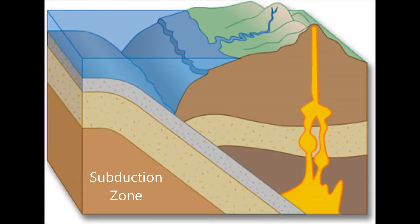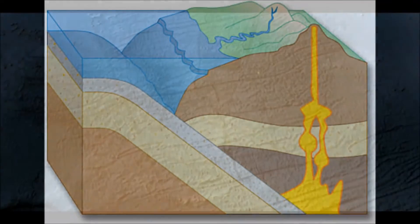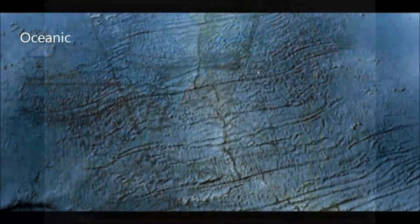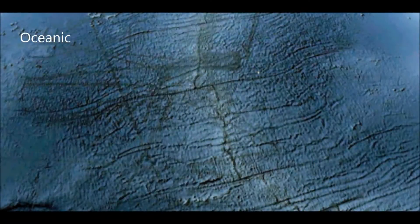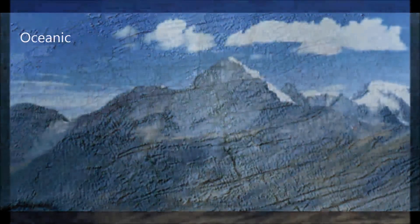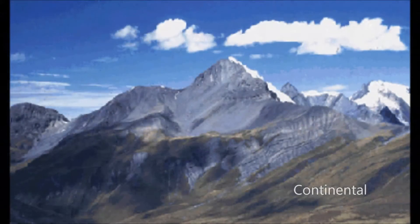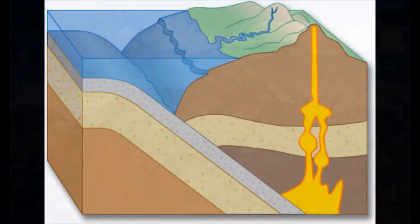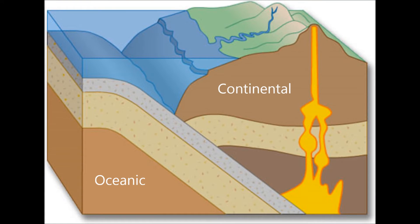There are two types of crust: the dense oceanic crust and the lighter continental crust. The oceanic lithosphere, being denser in nature, slides beneath the lighter continental lithosphere when these two types of land masses meet.